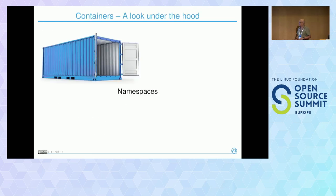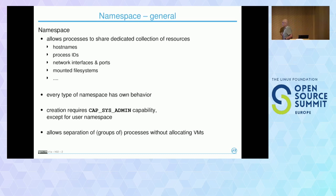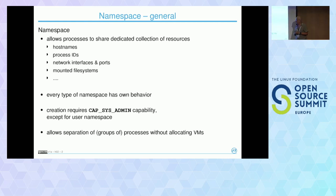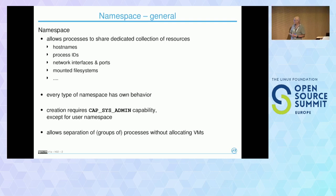Namespaces allow processes to share a dedicated collection of resources like hostnames and process IDs. Every type of namespace has its own behavior — PID namespaces behave differently from UTS namespaces. In general, to create new namespaces a process needs the CAP_SYS_ADMIN capability, meaning you have to be root, except for user namespaces. This really allows separation of groups of processes without allocating VMs — it's the basis of making containers.